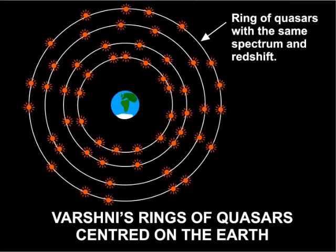Later, it was reported that Varshini had recanted from his claim, but this he flatly denied. It demonstrates once again the depths of underhand ploys and dirty tricks that the opposition will stoop to in order to destroy any evidence that damages their conventional theories, and that places the Earth at the centre of the universe.